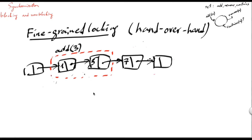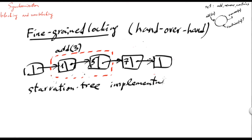We notice that the progress guarantees of the resulting fine-grained locking implementation are inherited from the progress guarantees of the locks they use. For example, if the locks are starvation-free — meaning that if no process holds the acquired lock forever, every process that tries to get the lock would eventually succeed — the implementation would also be starvation-free, meaning that every operation eventually completes in a finite number of its own steps, assuming no other operation keeps the locks acquired forever. And this is the case with our implementation.